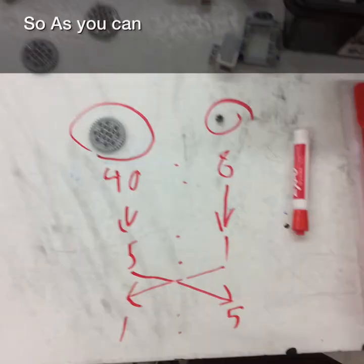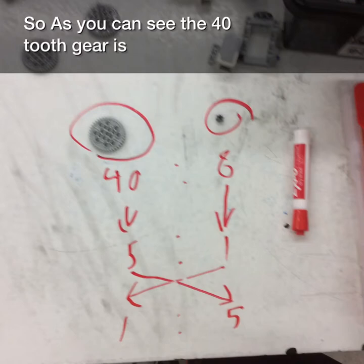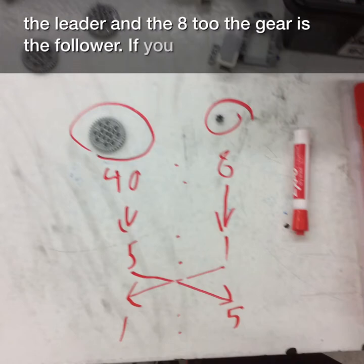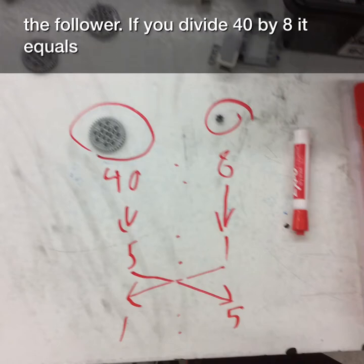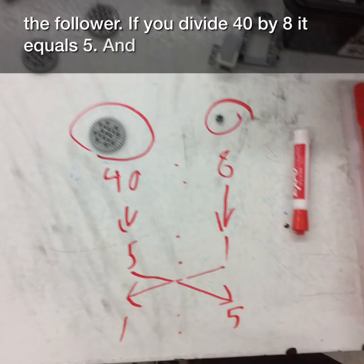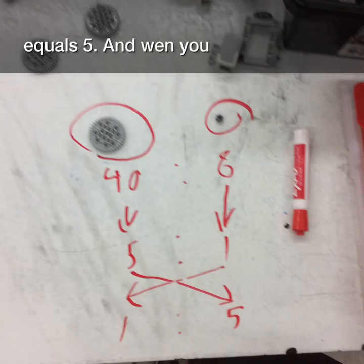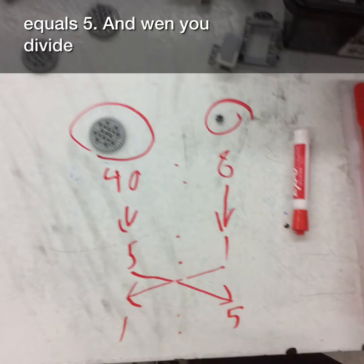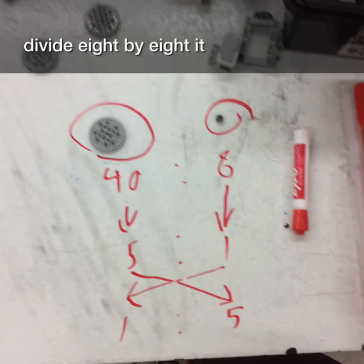So as you can see, the 42-tooth gear has 48, and the 8-tooth gear has 8 teeth. So when you divide 40 by 8, it equals 5, and when you divide 8 by 8, it equals 1.